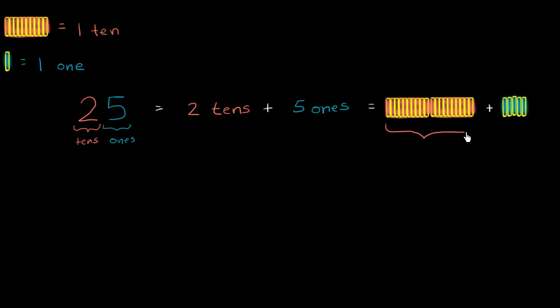Well, two groups of ten - this is the same thing as twenty. And this over here is equal to five. So once again, all ways to represent twenty-five. You could view this as two tens plus five ones, or you could view this as